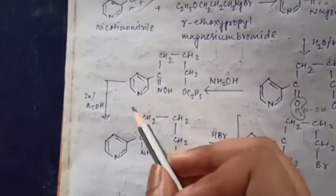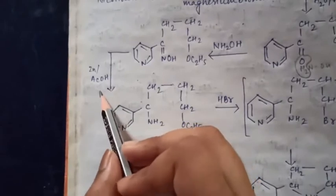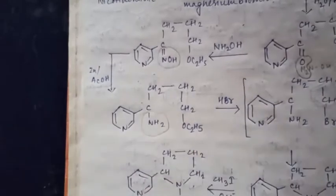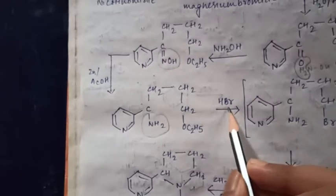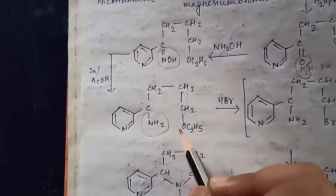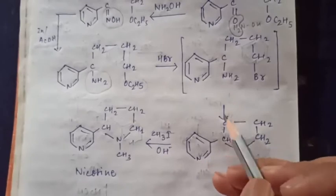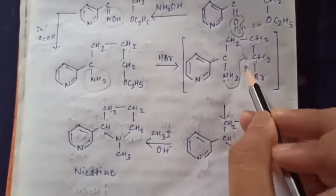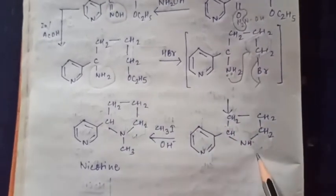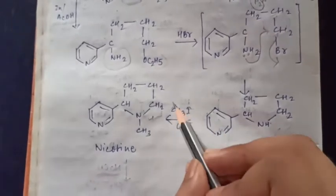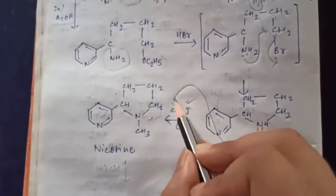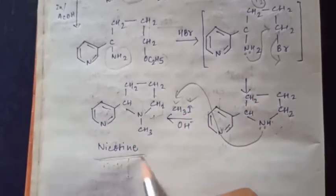The oxime is then reduced using zinc in the presence of acetic acid, converting the C=NOH to an NH2 group. We then treat with HBr, which reacts with the OC2H5 group, giving a bromo compound. Cyclization then takes place — nitrogen attacks the carbon bearing bromine, displacing Br. After cyclization, we treat with methyl iodide for N-methylation. Nitrogen attacks to give our desired product, nicotine.